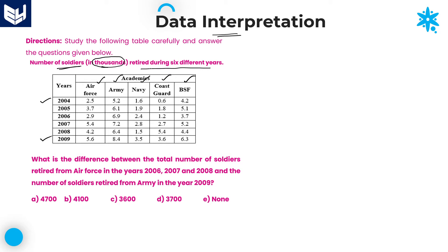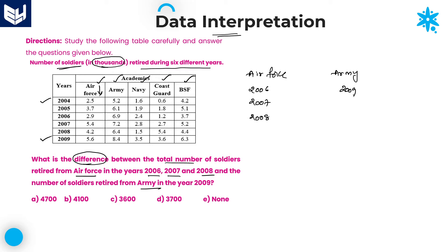In that time period, we are given the number of soldiers retired from their duties. Now look at the first question: what is the difference between the total number of soldiers retired from Air Force in the years 2006, 2007, and 2008, and the number of soldiers retired from Army in 2009? Army 2009 is 8.4 thousands, which equals 8400.